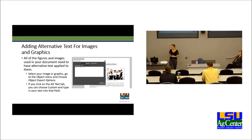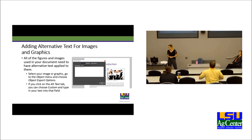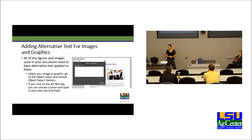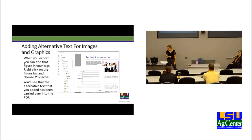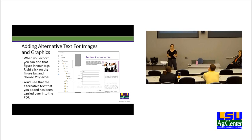Adding alternative text for images and graphics in InDesign: all figures and images used in your document need to have alternative text applied. To do this, select your image or graphic, go to the Object menu, and choose Object Export Options. Click on the Alt Text tab, choose Custom, and type in your text. Click Done and your alt text is added. When you export, find that figure in your tags, right-click on the figure tag, choose Properties, and you'll see that the alternative text has been carried over into the PDF. An alternative way to add alt text using Adobe Bridge will be included in the Word document.